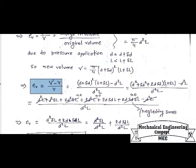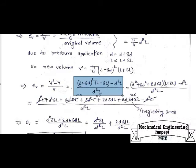When we simplify the volumetric strain as (V' minus V) divided by V, substituting the new volume and original volume into the equation, we see that pi/4 is common in both numerator and denominator and cancels out, leaving (D + delta D)²·(L + delta L) minus D²·L, all divided by D²·L. Simplifying by expanding (D + delta D)², we get the expanded expression.